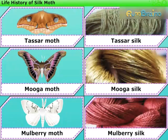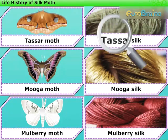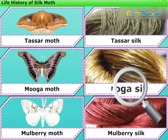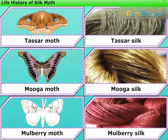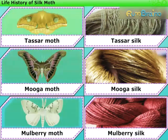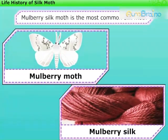Some common varieties of silk available in the market are: Tusser silk, Mogga silk, Mulberry silk, etc., which are obtained from cocoons spun by different types of moth. Mulberry silk moth is the most common silk moth.